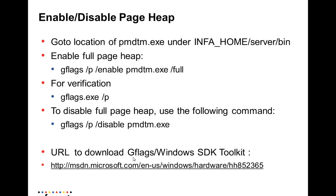Moving back to the presentation — these are the steps summarized on the slides. Navigate to the location where PMDTM exists, or invoke it directly if it is already in the path. To enable page heap: gflags /p /enable PMDTM.exe /full. To verify: gflags /p, which shows whether any applications have page heap enabled. To disable: gflags /p /disable PMDTM.exe. To download GFlags or the Windows Developer Toolkit, refer to the Microsoft URL provided and download the SDK.